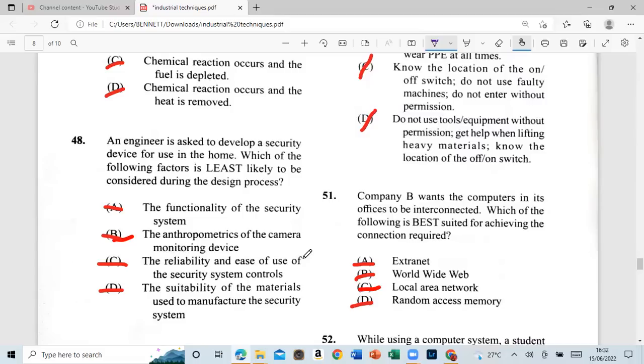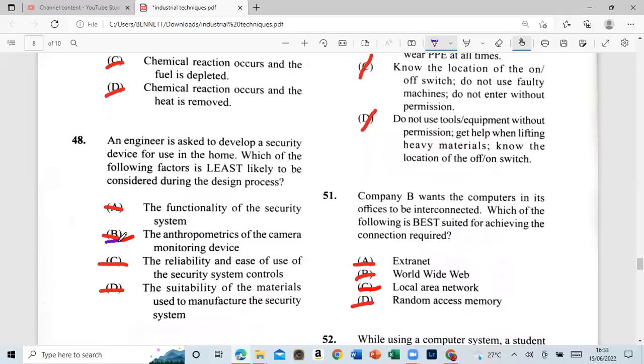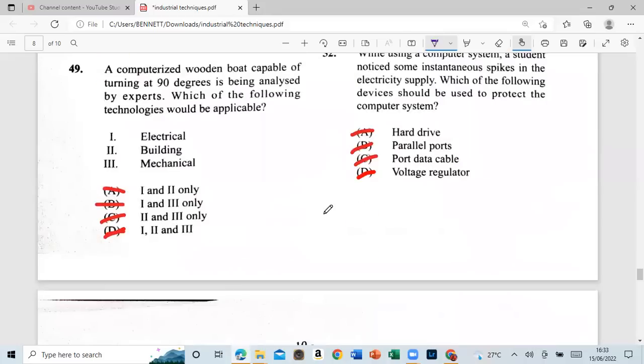An engineer is asked to develop a security device for use in the home. Which of the following factors is least likely to be considered during the design process? A: the functionality of the security system. B: the antibiotics of the camera and the monitoring device. C: the reliability and the ease of use of the security system control. D: the suitability of the material used to manufacture security system. And that is the entry of the metrics of the camera monitoring device. What it is is B. All right. So let's move on to 49. And then after that, we have about 10 leave. I'm at 49.